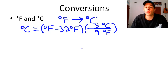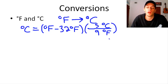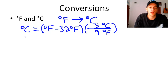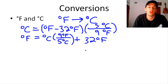To go from degrees Celsius back to degrees Fahrenheit, we just manipulate the equation algebraically: multiply both sides by the inverse of 5/9, which is 9/5, and then add 32°F. The result is: °F = °C × (9°F / 5°C) + 32°F. These two equations are essentially the same thing — one is just a rearrangement of the other.